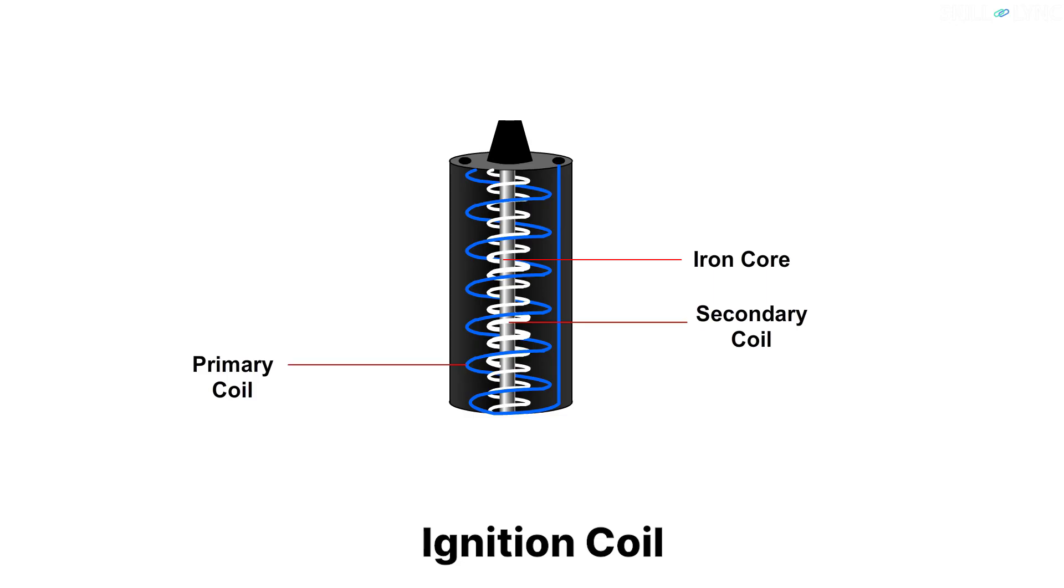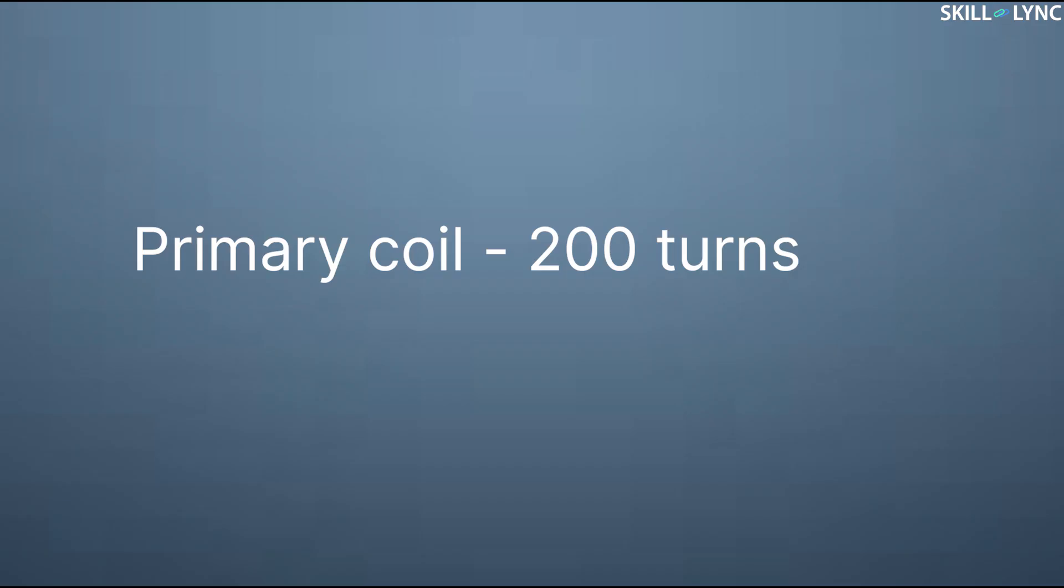Then there is an ignition coil that consists of primary and secondary windings wound over a soft iron core. The primary winding consists of about 200 turns and the secondary winding consists of about 20,000 turns. This complete setup is packed inside a metal container and acts as a step-up transformer.